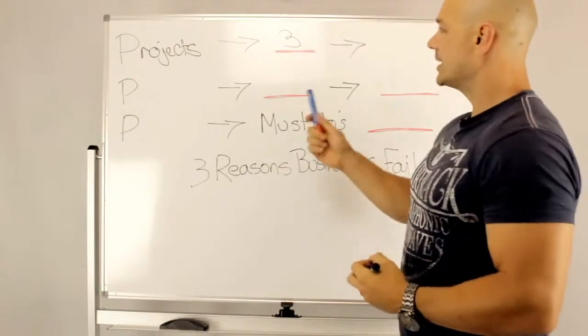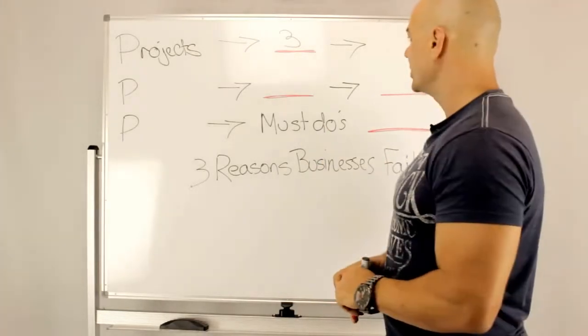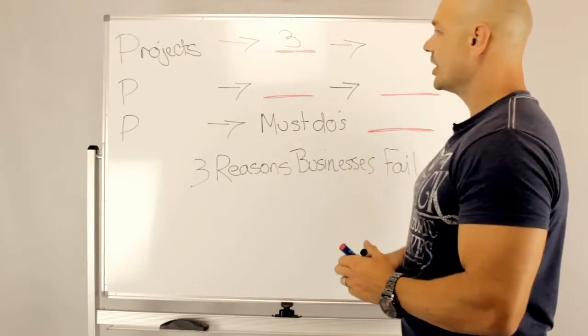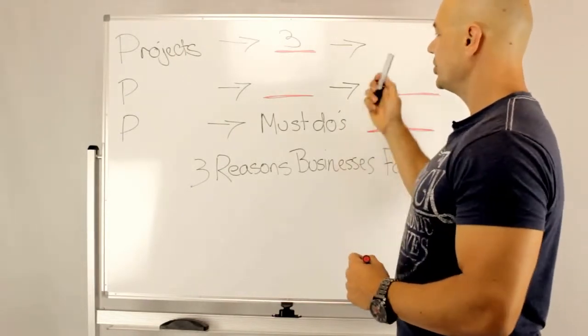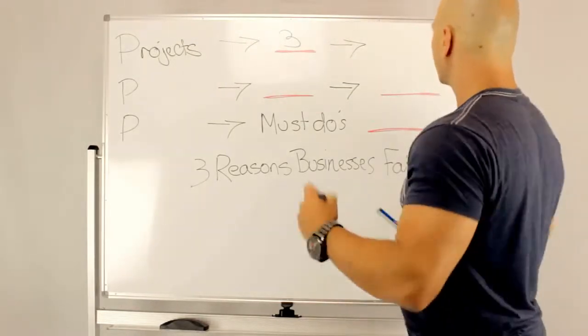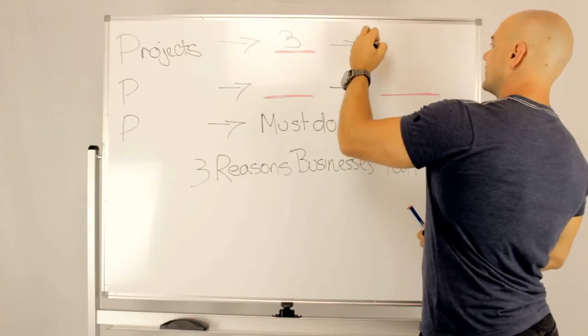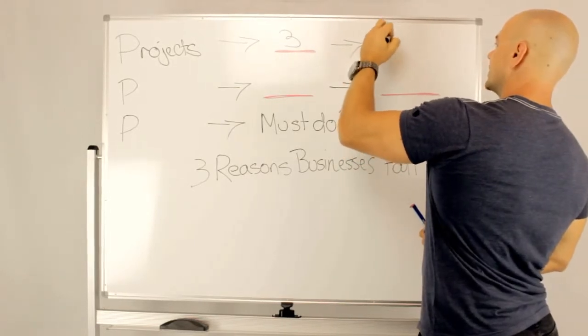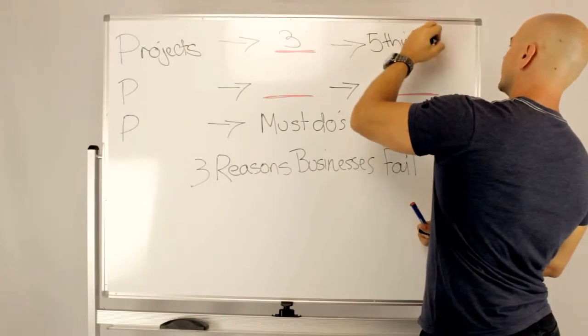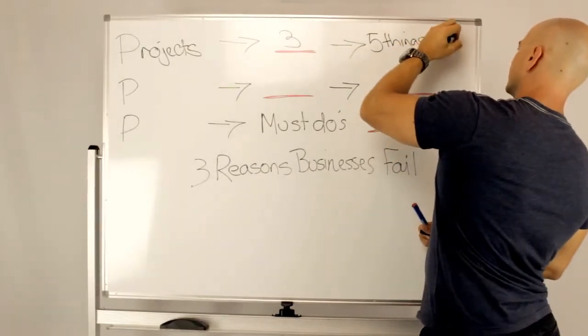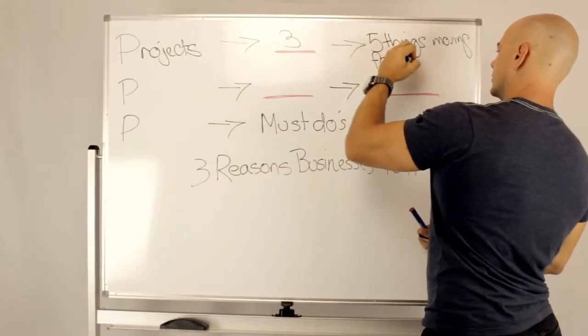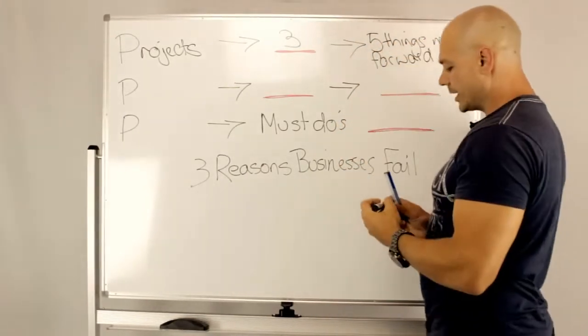The next step after you set the amount of projects that you want to work on, the recommend number is three, you want to start to think about what are the things you need to do to get these projects off the ground. What I recommend is you list five things to get this project off the ground or moving forward.